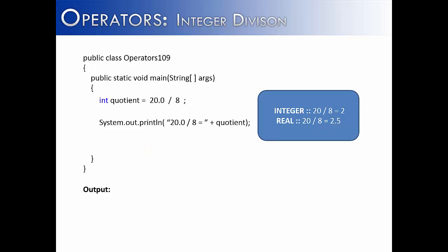What happens if only one of the values is an integer and the other value is a double? So we have a 20.0 and 8 is an int. If you have an int and a double, you cannot store that into an int. The reason being is that this would result in real division, giving you 2.5, and if you have 2.5, that cannot be stored as an int. It would give you a precision error.